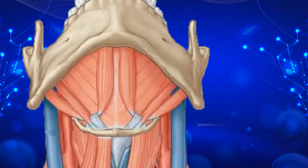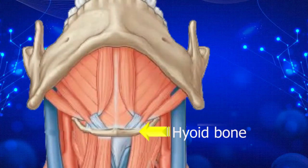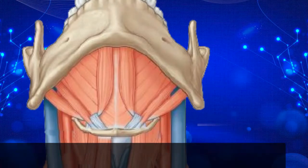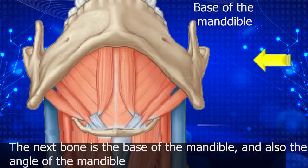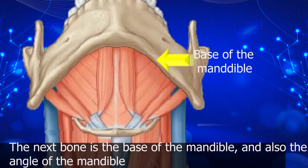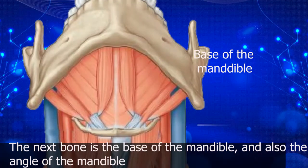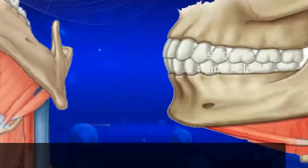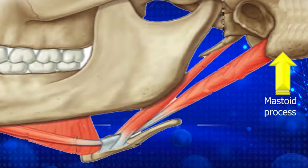We'll start with some of the bones. The first bone we'll look at is the hyoid bone. The hyoid bone is found below the mandible. This bone gives attachment to several muscles in this region. The next bone is the mandible itself. Here we are seeing the base of the mandible, giving prominent landmarks to some of the triangles we'll be talking about, and also even the angle of the mandible.